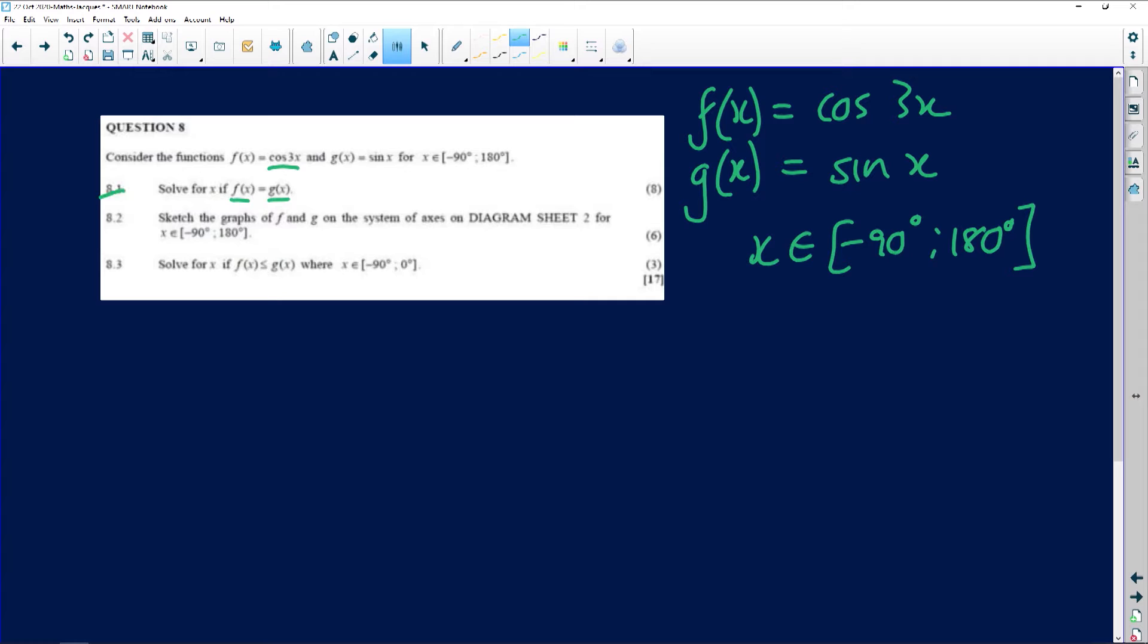The first question says, find out where is f equal to g. So, in other words, where the cos of 3x is equal to the sine of x. Now, folks, if you read it that way around, please, you've got to train your eye and your brain to do the gymnastics for you. You don't want to write the cos of 3x is equal to sine x. You want it the other way around, because then you look at things from the perspective of sine, and then you're only in the first two quadrants.